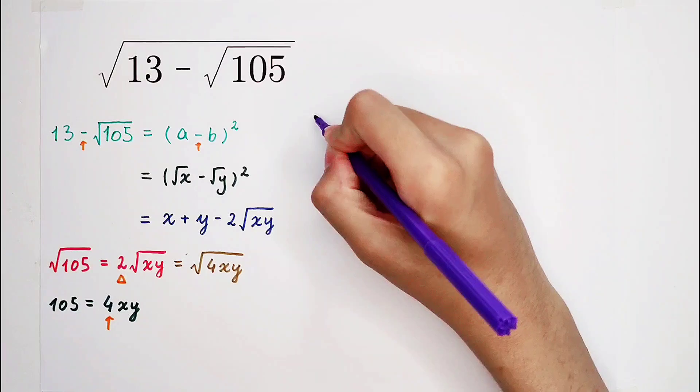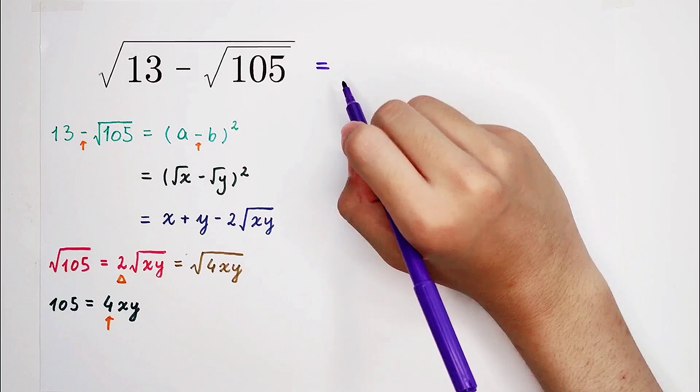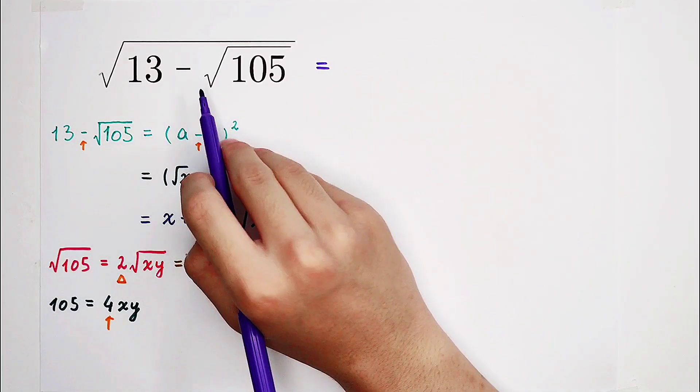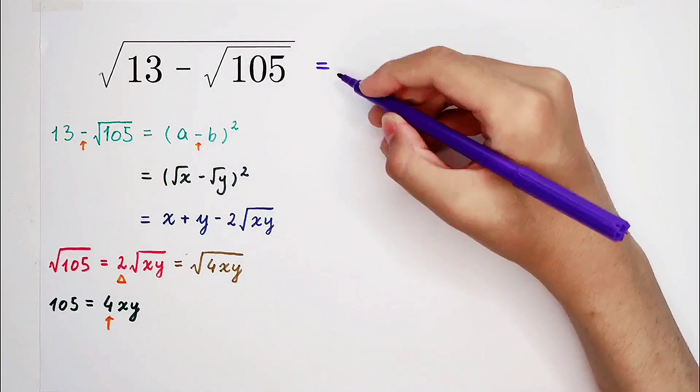So what should we do? Now we can multiply 13 minus square root of 105 by 2, and then divide by 2.